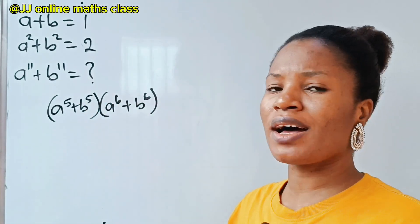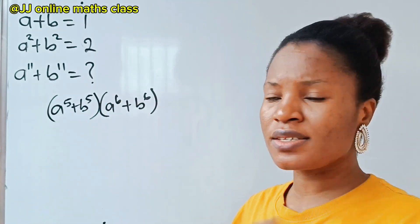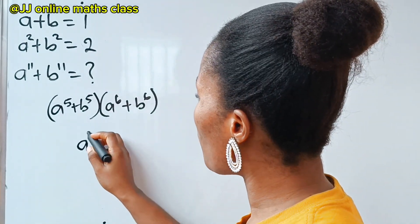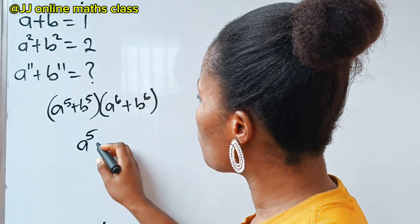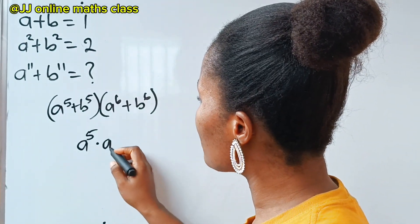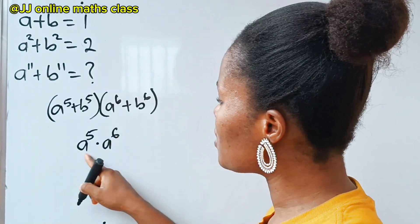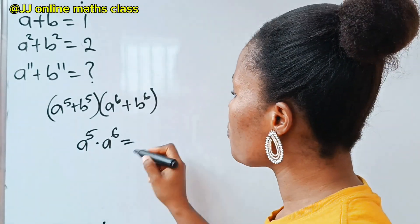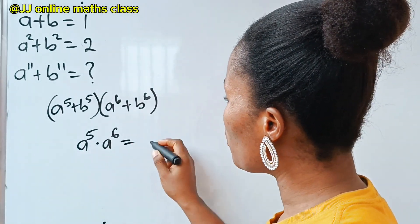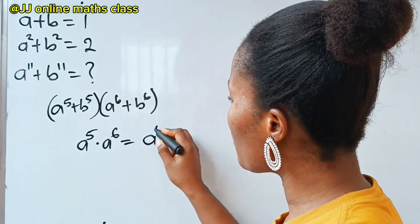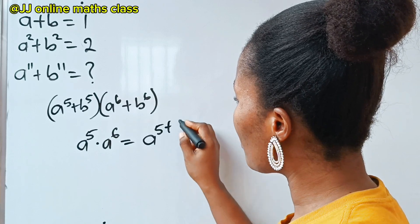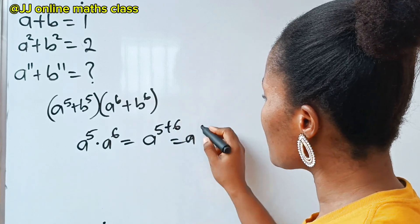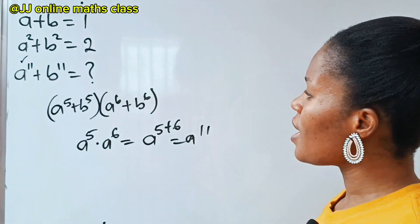Why do I say that? Recall the law of indices or exponents: a to the power of 5 multiplied by a to the power of 6 — if you have the same base, you pick one base. Once they are multiplying, you add the powers. You can see that we will get a to the power of 11, which is this.